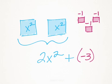And then I have 3 negative numbers, or negative ones, so that's going to be a plus negative 3. But I would simplify this down to 2x squared minus 3.